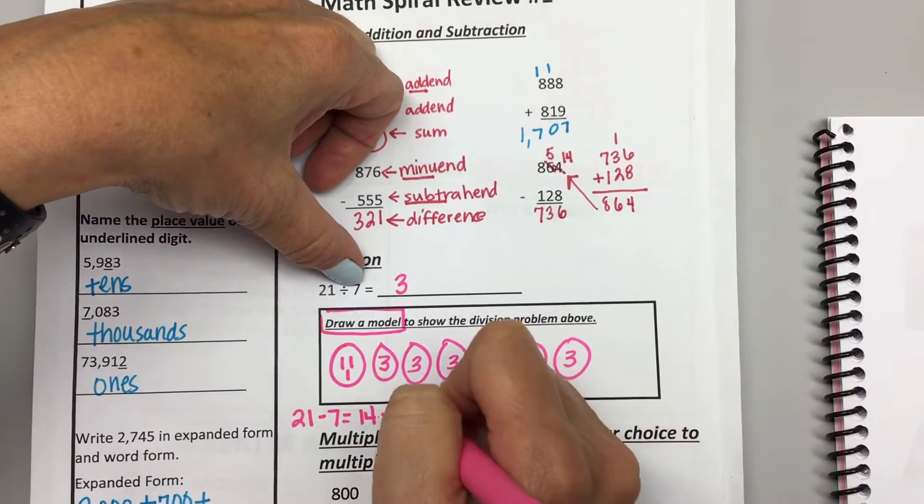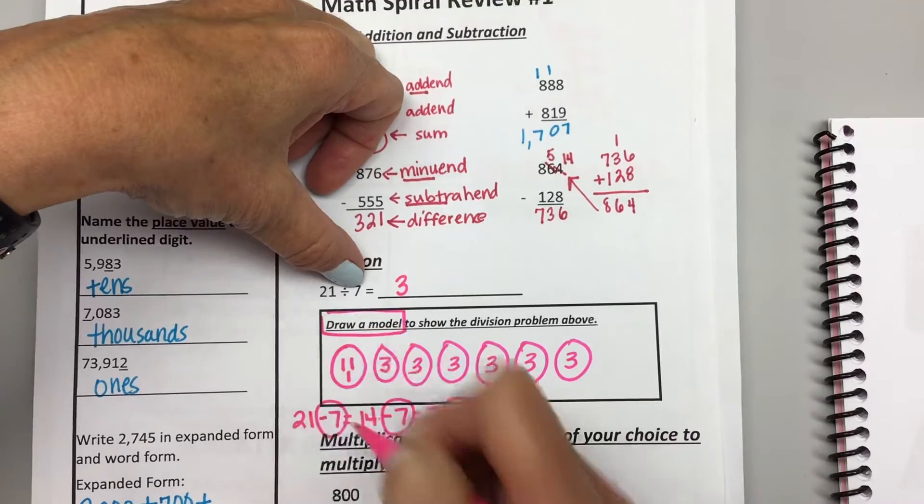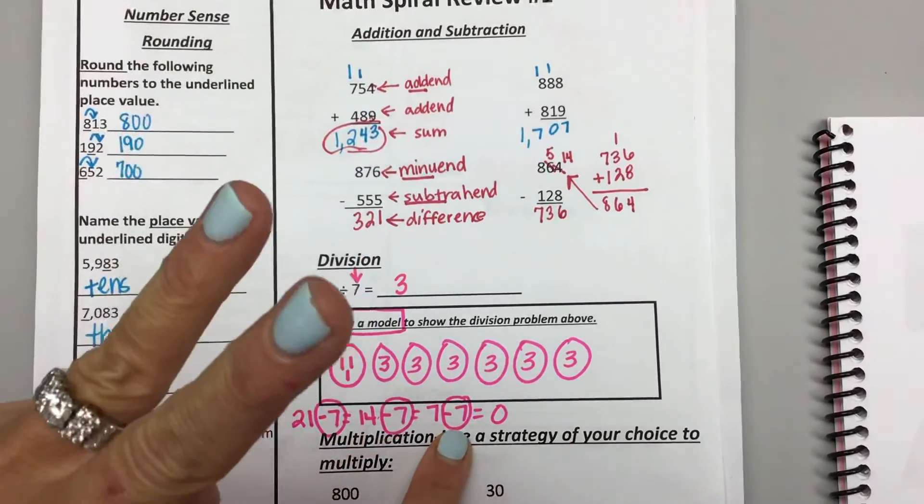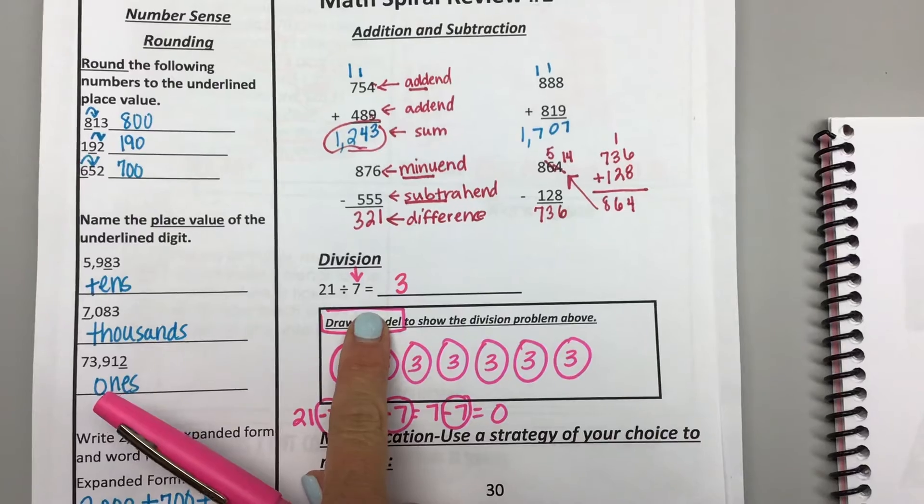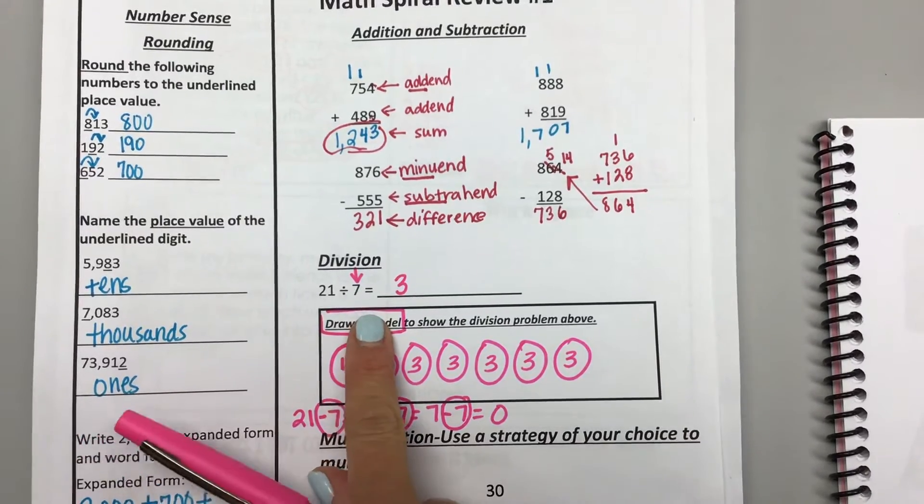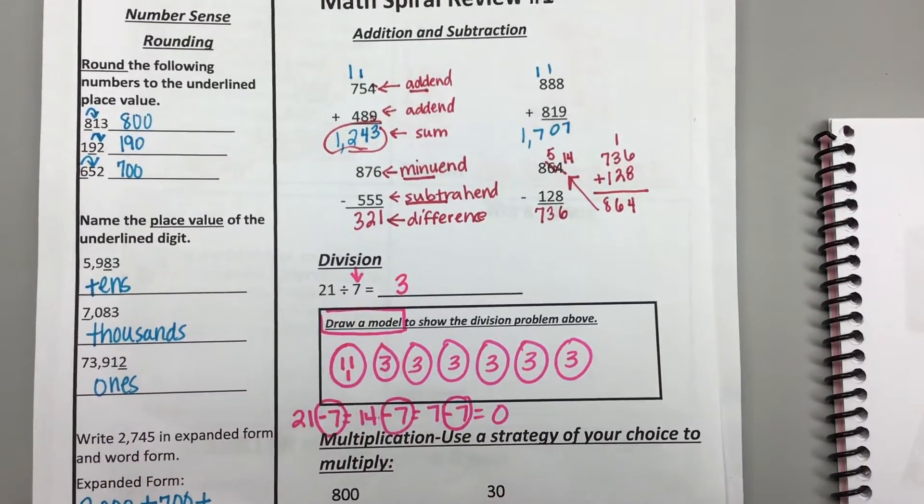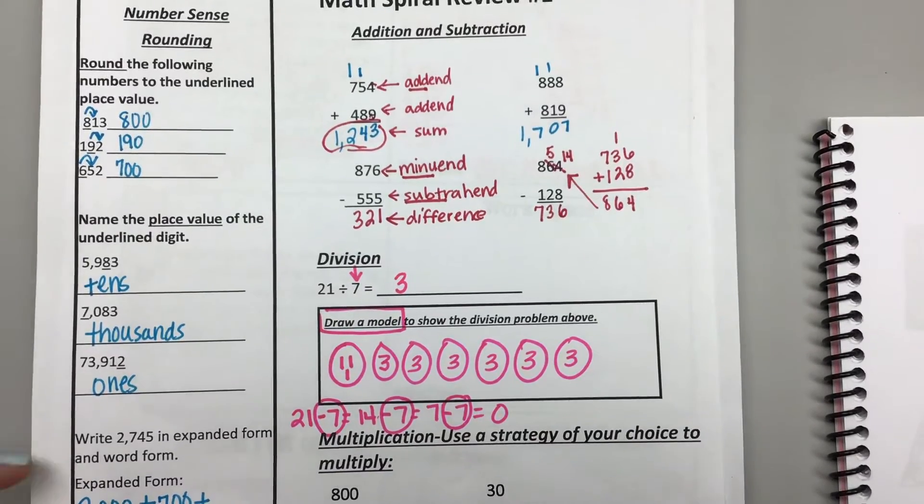And then when you get to 0, you circle. How many times did it take you to get to 0? 3. And that gives you your quotient. The answer to a division problem is called a quotient. So there's two ways to model that.